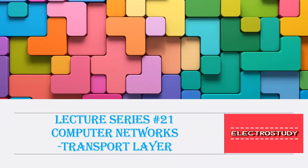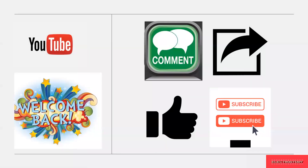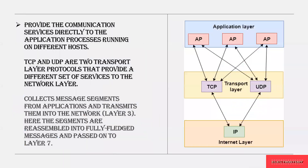Hi everyone, welcome back to our YouTube channel Electro Study. This is lecture series 21, computer networks, dealing with the transport layer. We have seen about the data link layer and network layer, and now this is the fourth layer we are seeing — the transport layer, which is responsible for transporting all the data or packets from the upper layer to the lower layer, or the lower layer to the upper layer, by following different protocols.